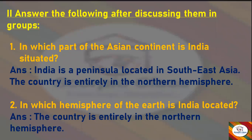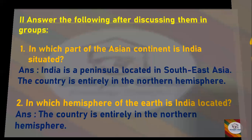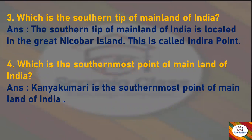First question: In which part of the Asian continent is India situated? Answer: India is a peninsula located in South Asia. The country is entirely in the northern hemisphere. Next: In which hemisphere of the Earth is India located? Answer: The country is entirely in the northern hemisphere. Next: Which is the important latitude that passes through central India? Answer: The Tropic of Cancer, or 23 degrees north latitude, passes through the central part of India.